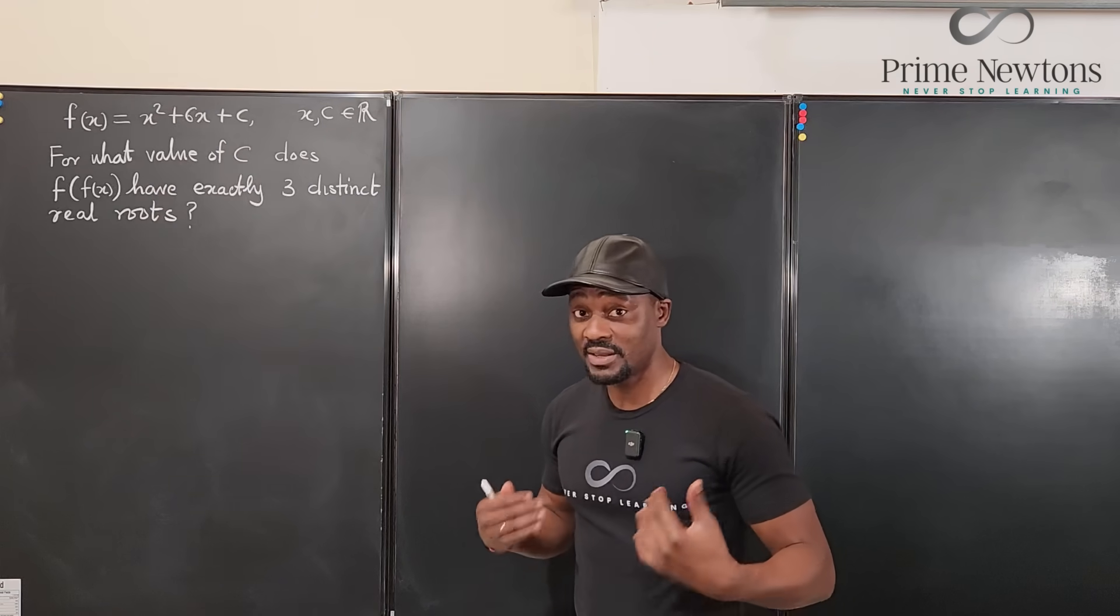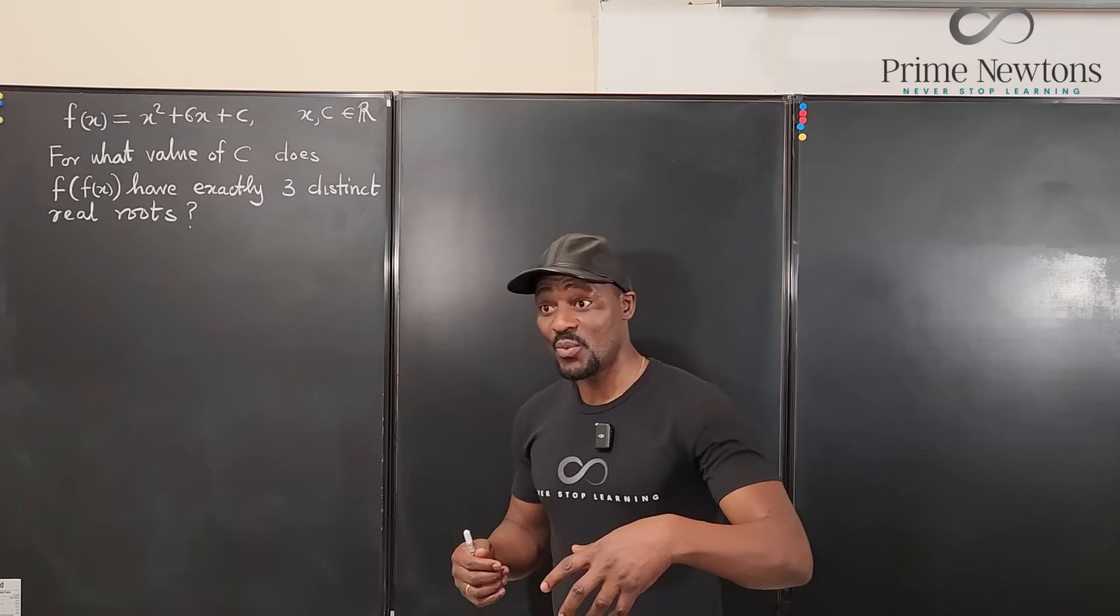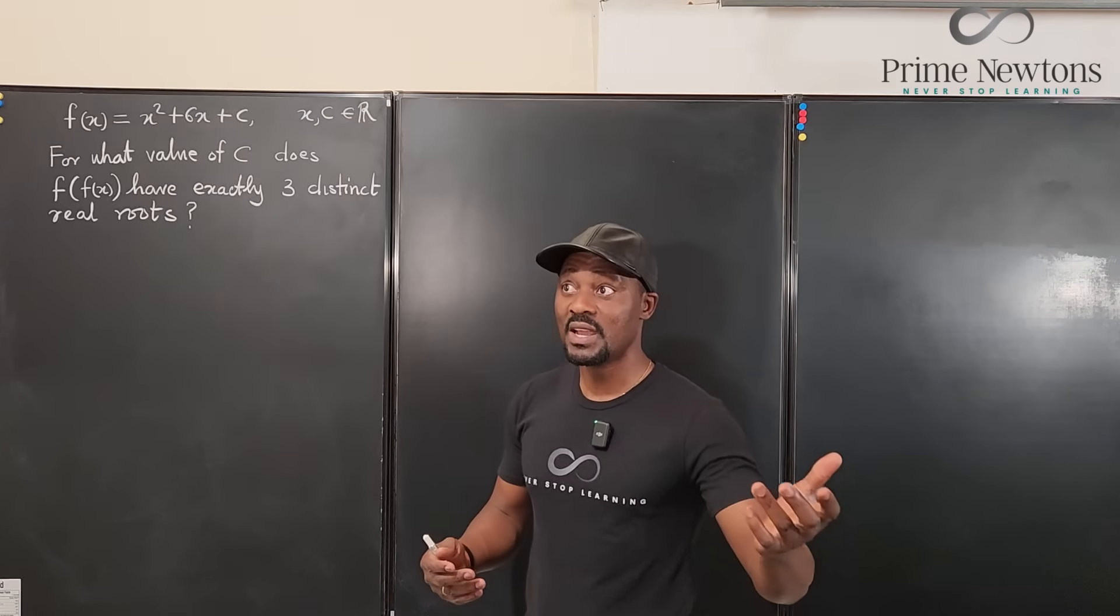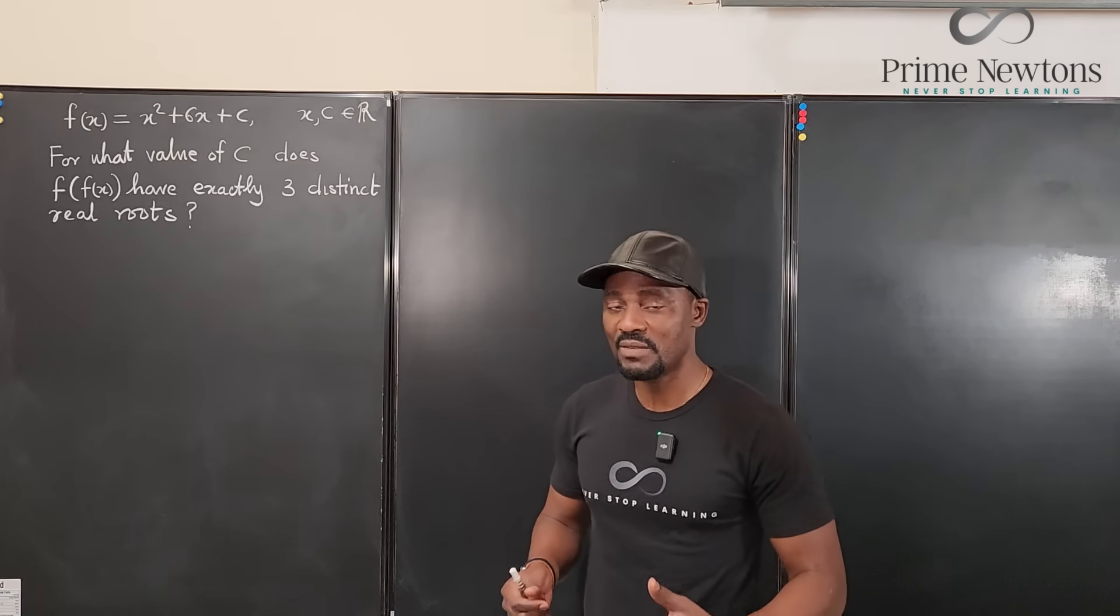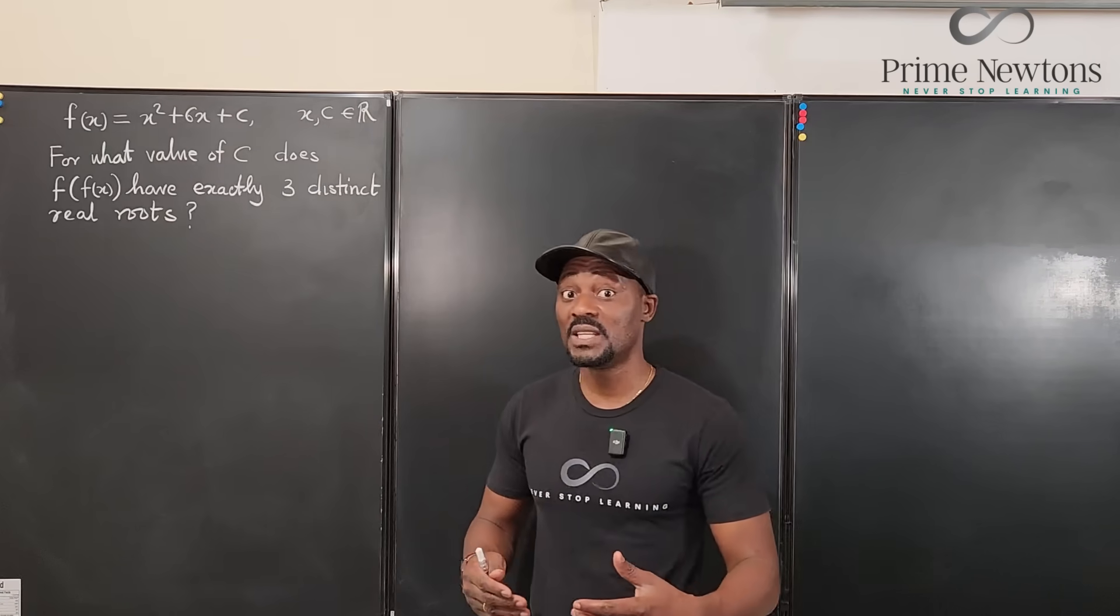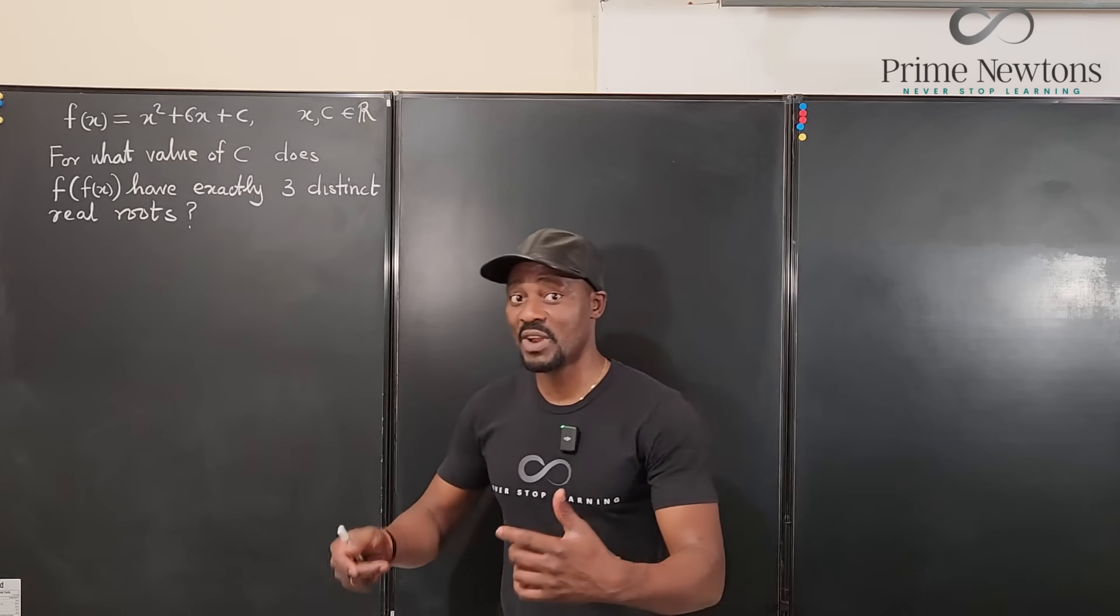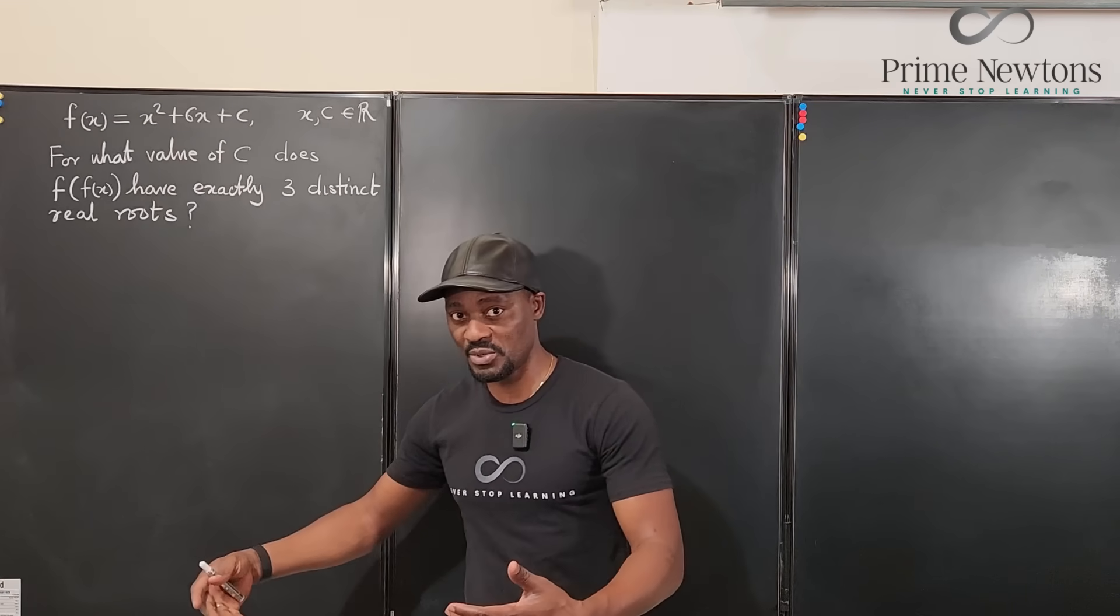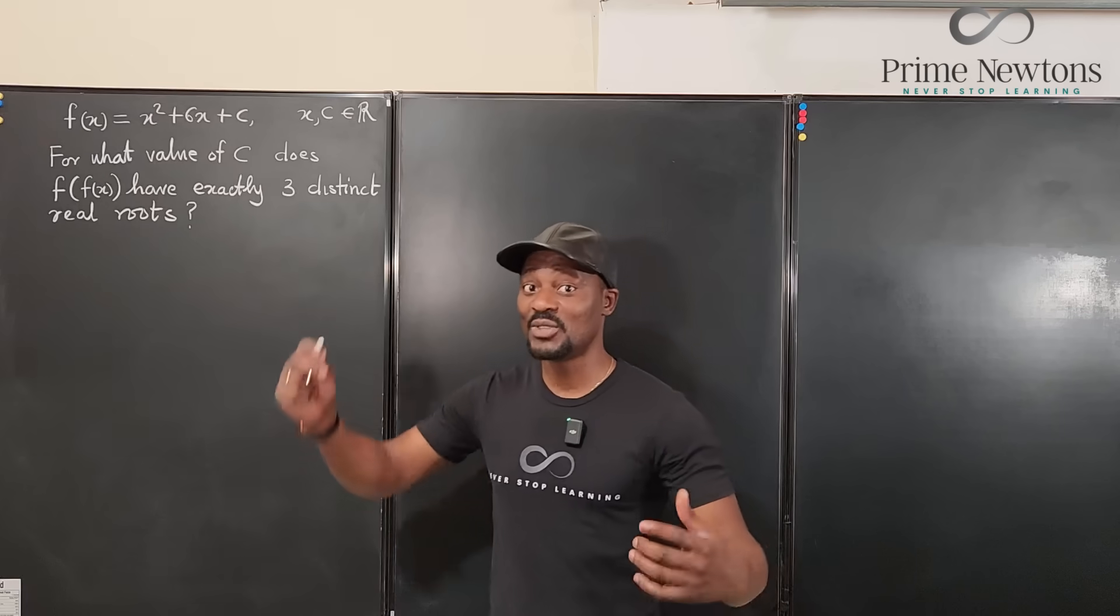So some basic knowledge that I have is that when you compose a polynomial with itself, what happens is the degree of the new polynomial is the square of the degree. For example, if you compose a linear function with a linear function, the new function you get is going to be a linear function because one times one is one. If you compose a quadratic with a quadratic, the new function is going to be a quartic, that is degree four polynomial. A cubic function composed with itself will be a ninth degree polynomial.